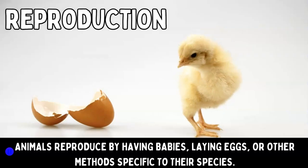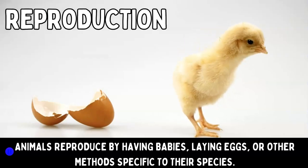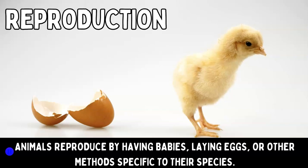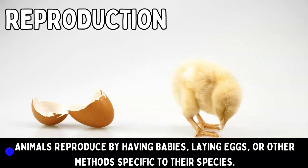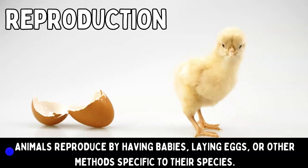Next, it's reproduction. Animals reproduce by having babies, laying eggs, or other methods specific to their species.